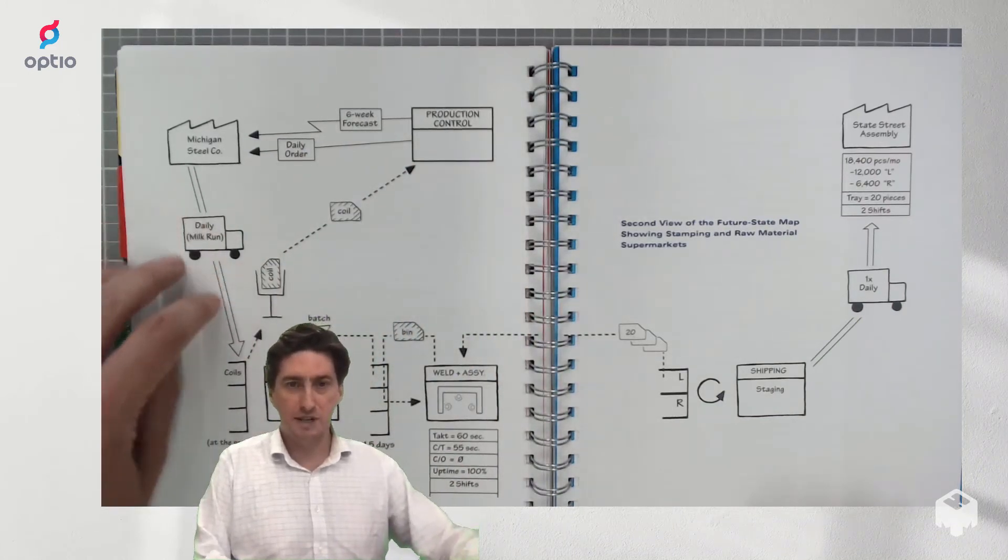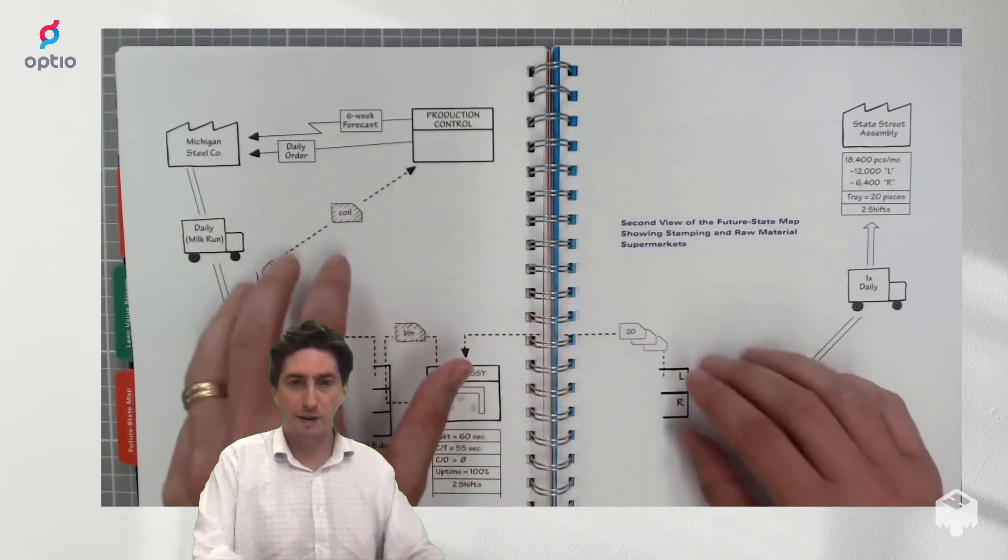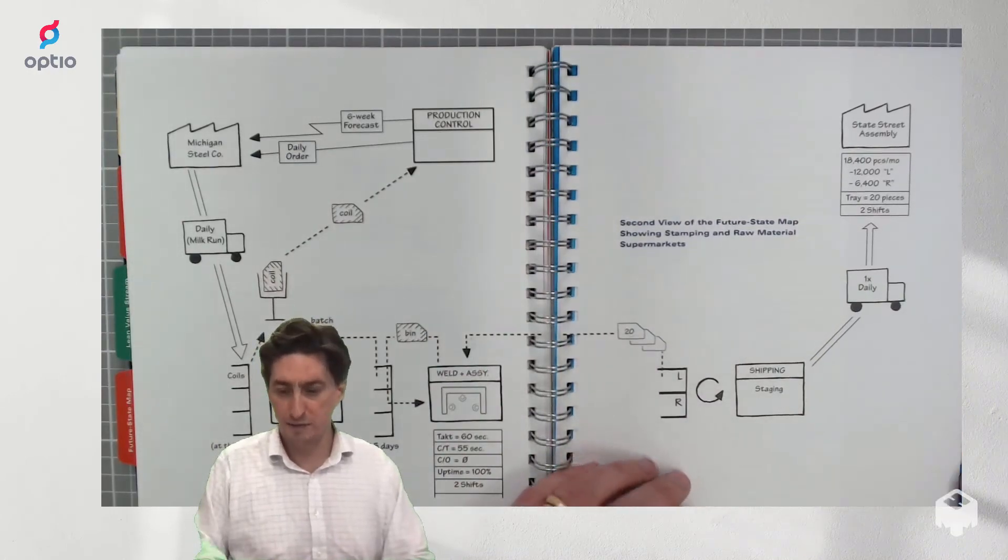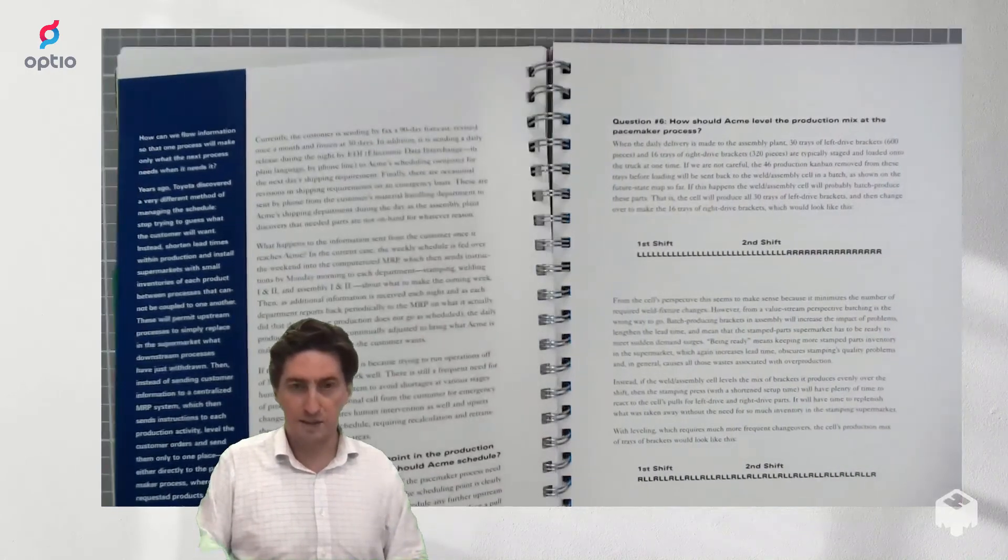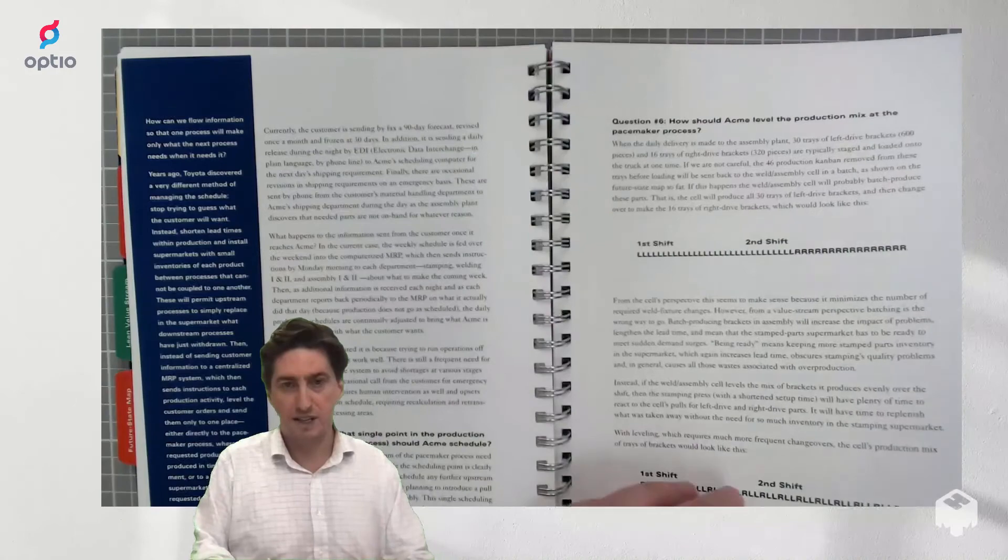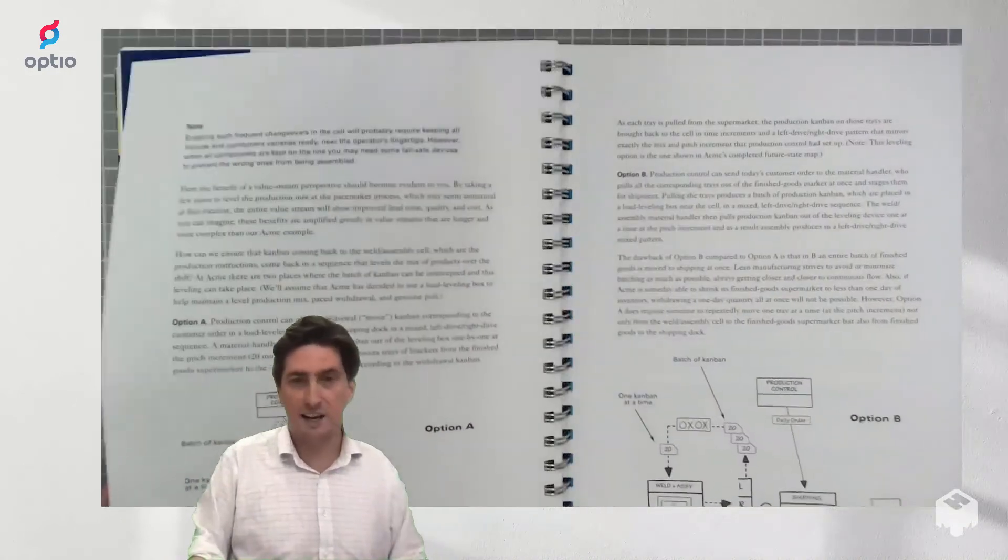So you still see your material flow and you still see your information flow but now it is much more simplified and the book claims a four-time reduction in lead time in this example.